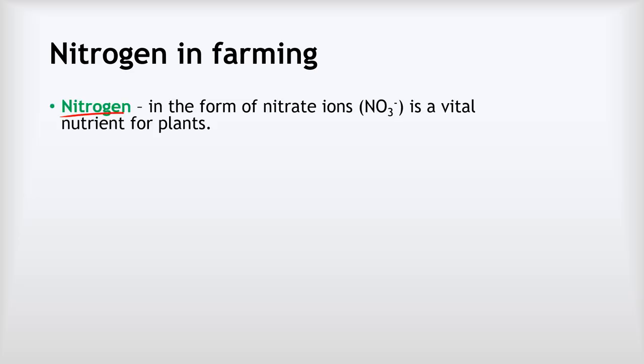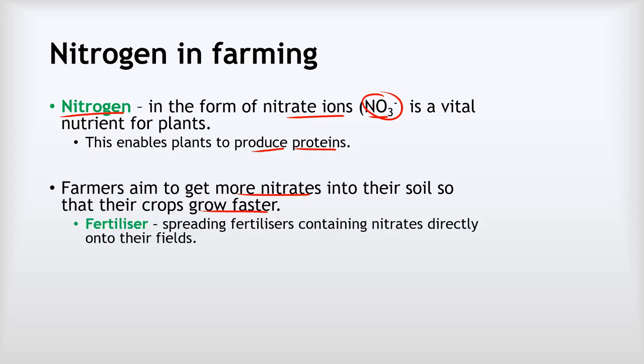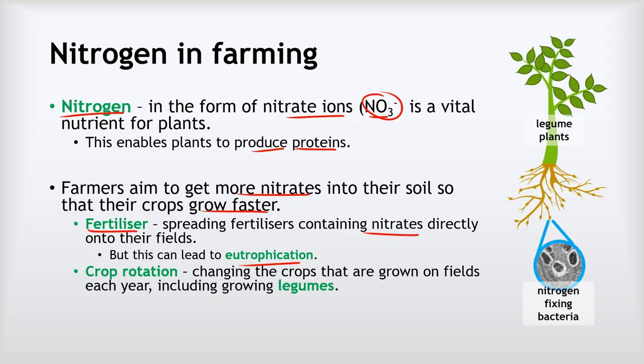Now the last material we need to look at that is cycled around the environment is nitrogen. Nitrogen is a super important nutrient. In the form of nitrate ions, it's a very important nutrient for plants. Nitrate ions are NO3 minus, and plants use nitrate ions to produce proteins. That means when animals eat the plants, they also get those proteins. Ultimately, all the protein that we need is really coming from those nitrate ions that the plants absorb. Farmers aim to try and get more nitrates into the soil so that their plants can grow faster by producing proteins more quickly. They might spread fertilizer on their fields. Those fertilizers often are made completely out of these nitrate ions or nitrate salts containing those nitrate ions, and that enables their crops to grow much faster. This is a really good thing because it can lead to more and cheaper food, but it can also lead to eutrophication if the farmers aren't careful about how they do it.